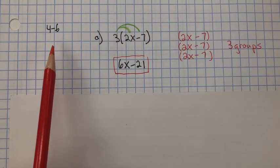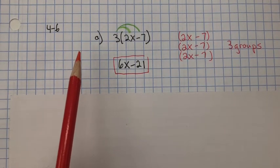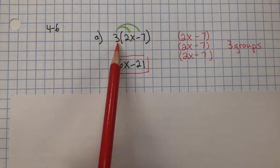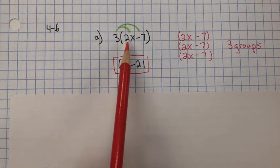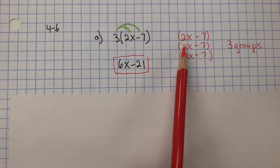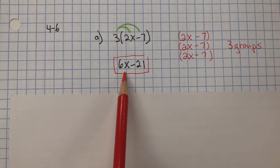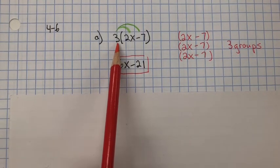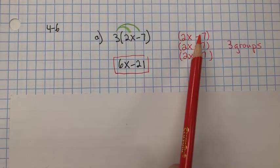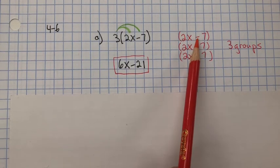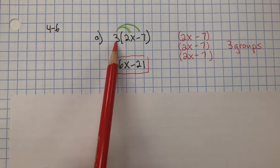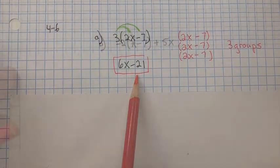In problem 4.6, I need to use the distributive property to rewrite each expression. This is 3 groups of 2x minus 7. So 2x plus 2x plus 2x is 6x, or you could say 3 multiplied by 2x is 6x. And then here are our 3 groups of negative 7: negative 7 plus negative 7 plus negative 7 is negative 21, or 3 multiplied by negative 7 is negative 21.